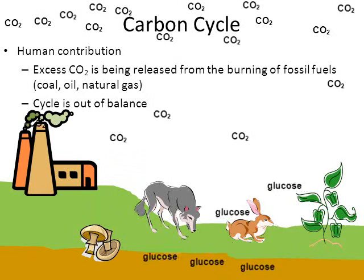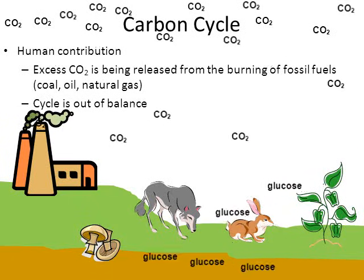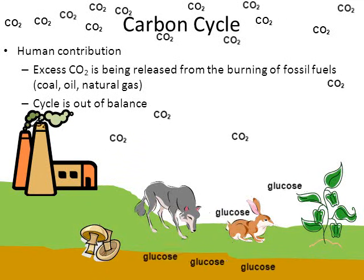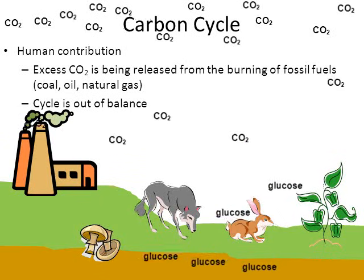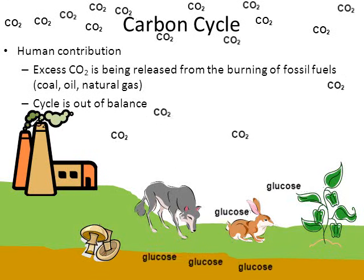Our concern is that the carbon cycle is out of balance. Not only are we releasing too much carbon dioxide into the environment, but we're also cutting down and deforesting trees and other plants that can take carbon dioxide out of the air. Some of the fears are that this could upset climate patterns around the world, causing a problem called global warming or climate change. This video won't go into global warming and climate change, but there is another video on that topic if you're curious.